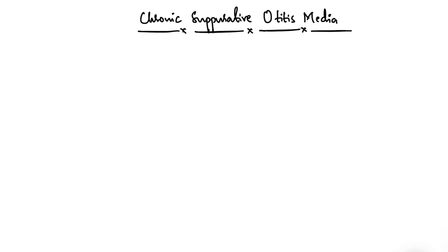Welcome to this video on CSOM, that is Chronic Suppurative Otitis Media. CSOM is a long-standing infection that might include a part or the whole of the middle ear. It is characterized by ear discharge along with permanent perforation. The perforation becomes permanent when the edges are covered by squamous epithelium and it does not heal spontaneously.